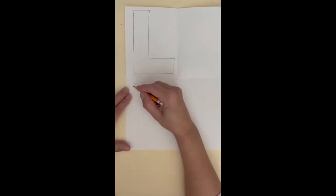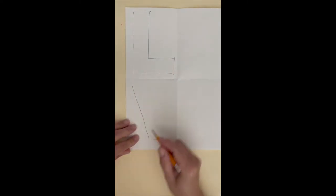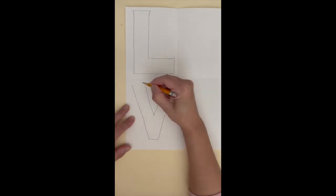For the block letter V, we're going to connect our lines with a flat line instead of a point. Make a smaller V in the middle and finish off your ends with those curved lines.